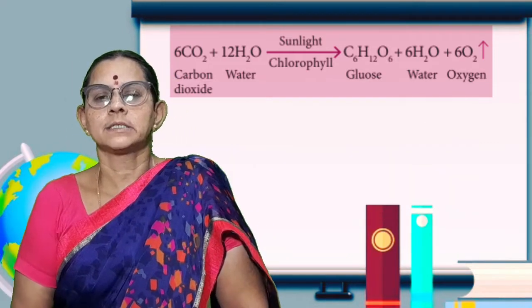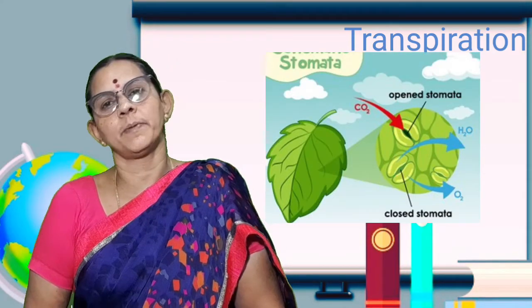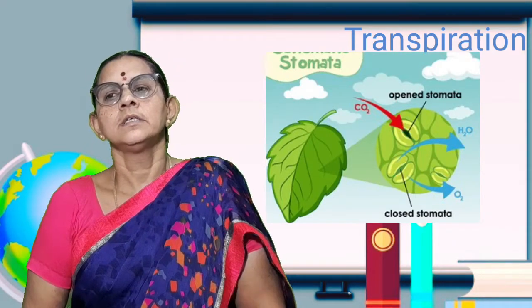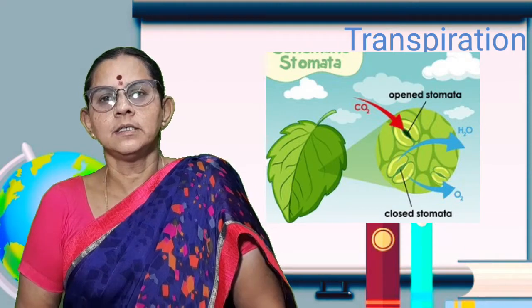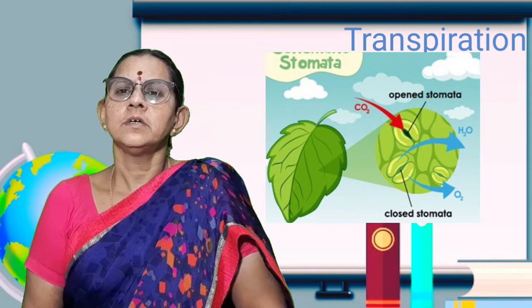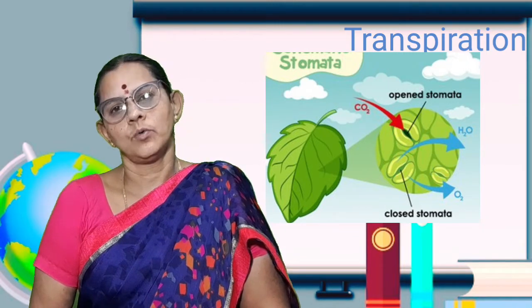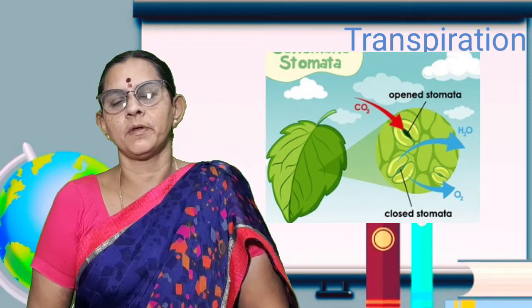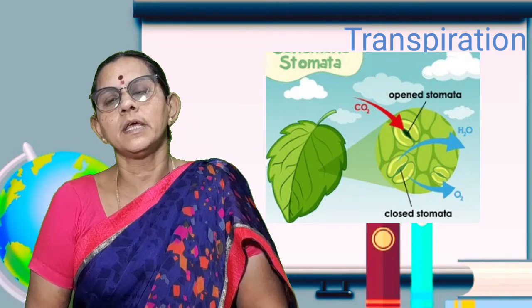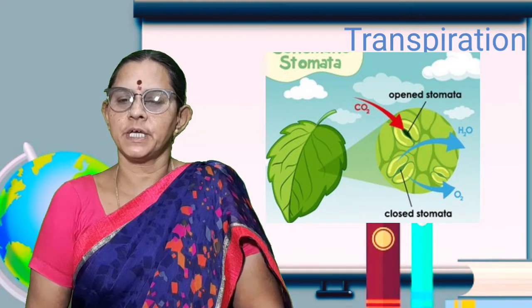Then, next topic: what is transpiration? Loss of water from the aerial parts of the plant in the form of water vapor is called transpiration.